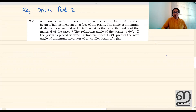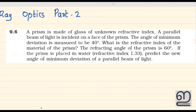These three are very important. Every prism is made of glass of unknown refractive index. A parallel beam of light is incident on the face of the prism. The angle of minimum deviation is 40 degrees. What is the refractive index of the material of the prism? The refracting angle of the prism is given as 60 degrees. If the prism is placed in water, predict the new angle of minimum deviation.